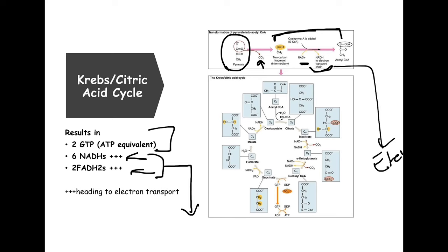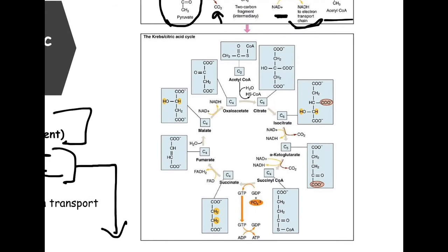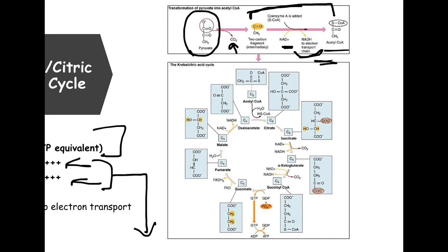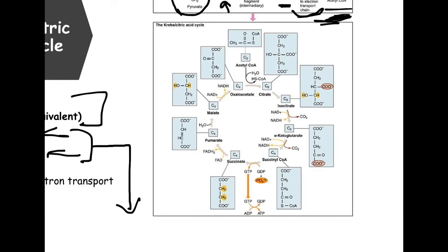Let's talk about the Krebs cycle without going into massive detail on all the enzymes. The acetyl-CoA made from pyruvate enters the Krebs cycle — the acetyl group is a two-carbon molecule that joins oxaloacetate, a four-carbon structure, to form citrate, a six-carbon molecule.